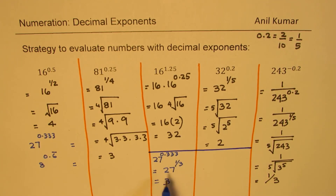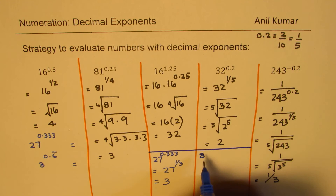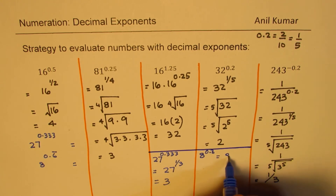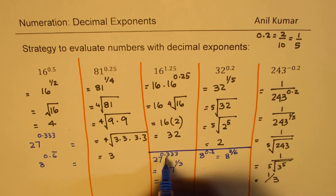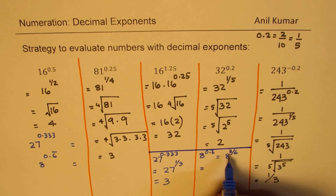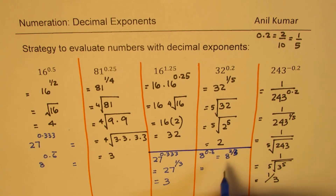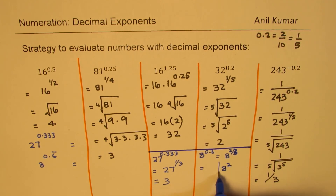Similarly, when we have 8 to the power of 0.6 recurring, it really means 8 to the power of 2 over 3, since 0.6 recurring is 2 over 3. So we need to figure out the cube root of 8 and then square it.